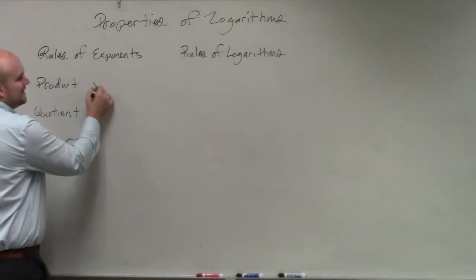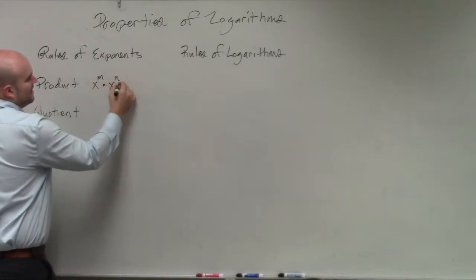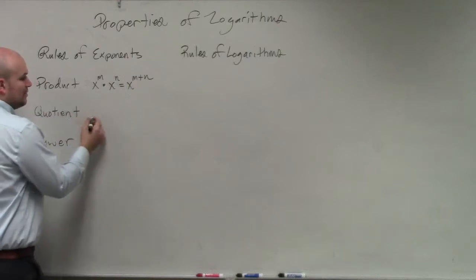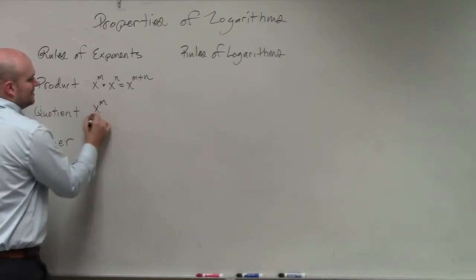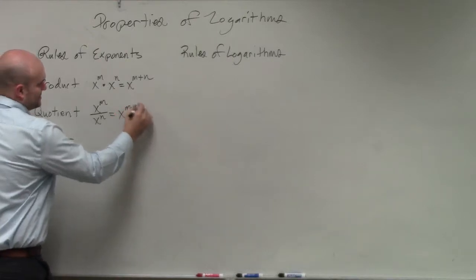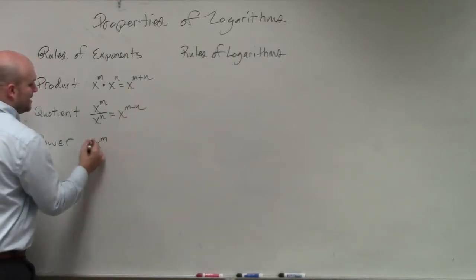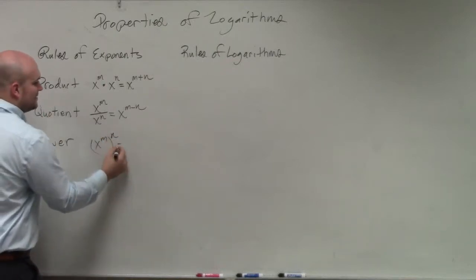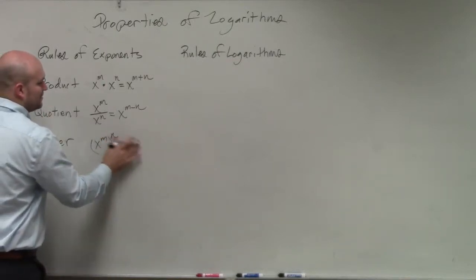Basically, the product rule states if you have x to the m times x to the n, then you add the powers. For the quotient rule, if you have x to the m divided by x to the n, then you subtract the powers. And the power rule states if you have x to the m raised to the n, then you multiply these.